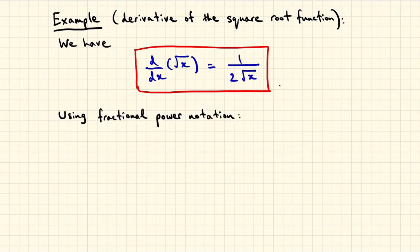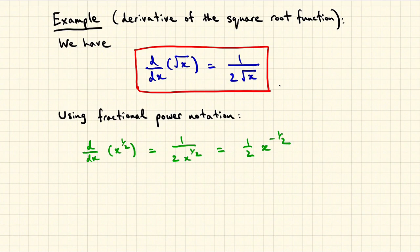We can relate this to fractional powers because the square root of x is just x to the power of 1 half. This rule for differentiation then becomes d dx of x to the power of 1 half is 1 over 2 times x to the power of 1 half. But note that this can be rewritten as 1 half of x to the power of minus 1 half. And so we get this nice formula. Note that this matches precisely the formula that we've mentioned before for the derivative of x to the n where n equals 1 half.